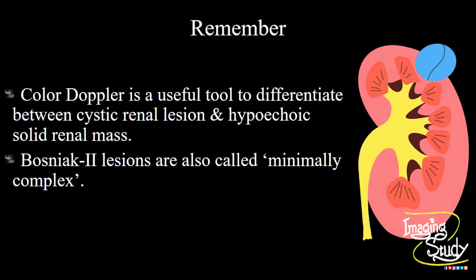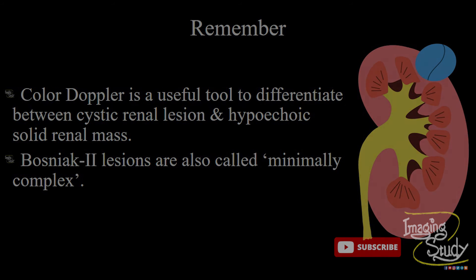The take-home message: Color Doppler is a useful tool to differentiate between a cystic renal lesion and a hypoechoic solid renal mass. If you have the Doppler facility, don't forget to use that when you find a cystic structure within a kidney. Bosniak II lesions with hairline thin septations are also called minimally complex cysts.